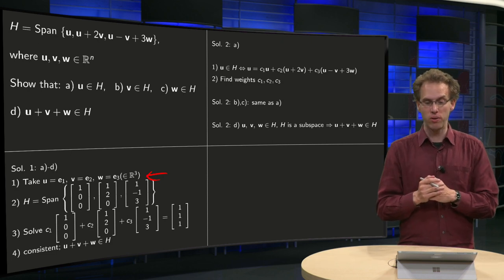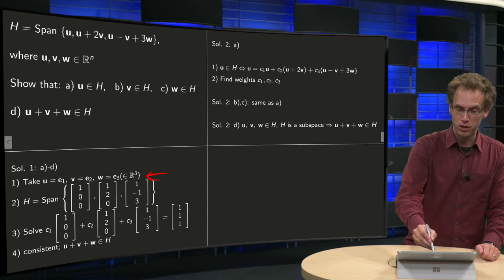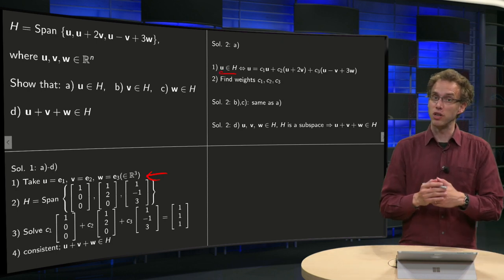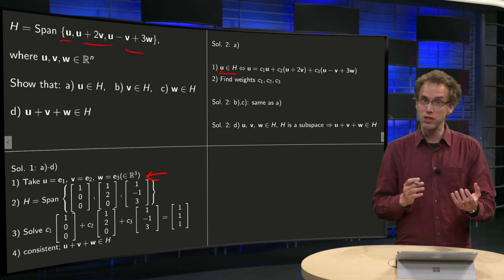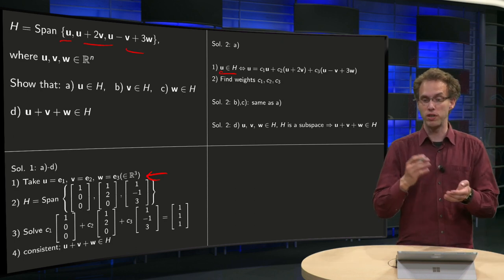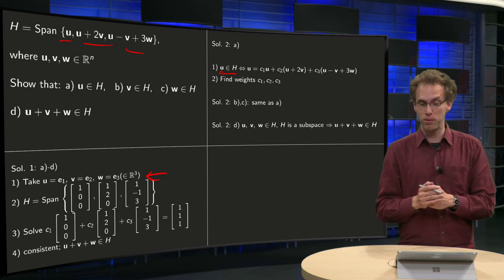First of all, you start with the definition. U is in H if U is a linear combination of those vectors over here. So you have to find weights such that U equals C1 times U plus C2 times (U plus 2V) plus C3 times (U minus V plus 3W).